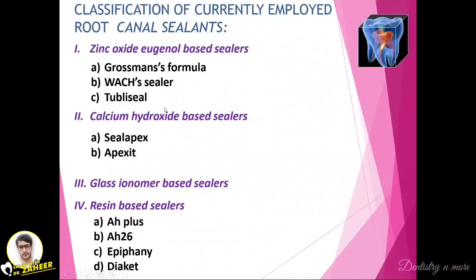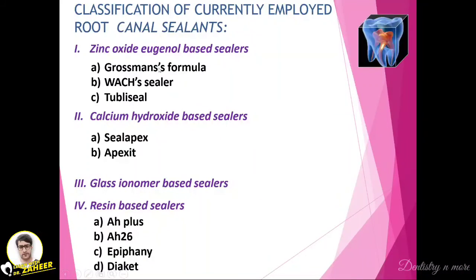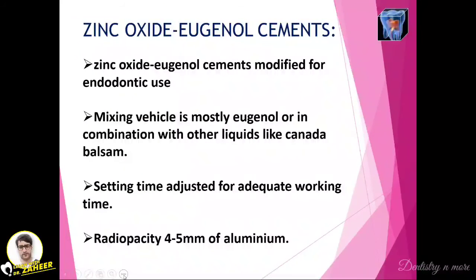The classification of root canal sealants has four basic categories: zinc oxide eugenol-based sealer, calcium hydroxide-based sealer, glass ionomer-based sealer, and resin-based sealer. Under zinc oxide eugenol sealer we have Grossmann's formula, wax sealer, and Tubli-seal. Under calcium hydroxide we have Seal Apex and Apex It. Then we have glass ionomer sealer, and the resin-bonded sealers include AH Plus, AH26, Epiphany, and Diaket.